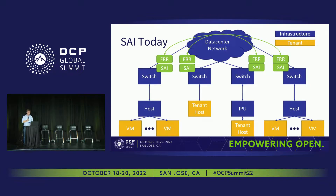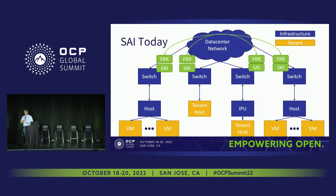Today, the main intent of SAI is to run as an abstraction across multiple ASICs from different vendors. On top of that, you would run a routing stack of your choice — it might be FBOSS with OpenR, it might be free range routing, it might be something else.